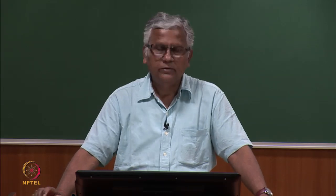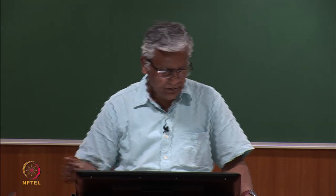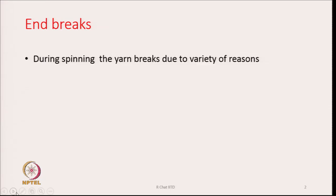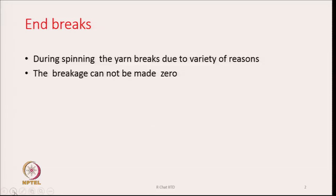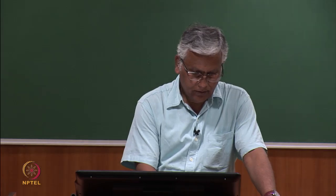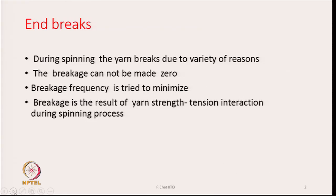Today's topic is end breaks. End breaks basically means the breaks of the yarns while the spinning is continuing. During spinning, unfortunately, yarn will break from time to time on some spindles due to a variety of reasons. The breakage cannot be made zero, especially with cotton spinning or when you spin staple fibers. We only try to reduce or minimize the breakage frequency, and breakage is the result of yarn strength-tension interaction during the spinning process.